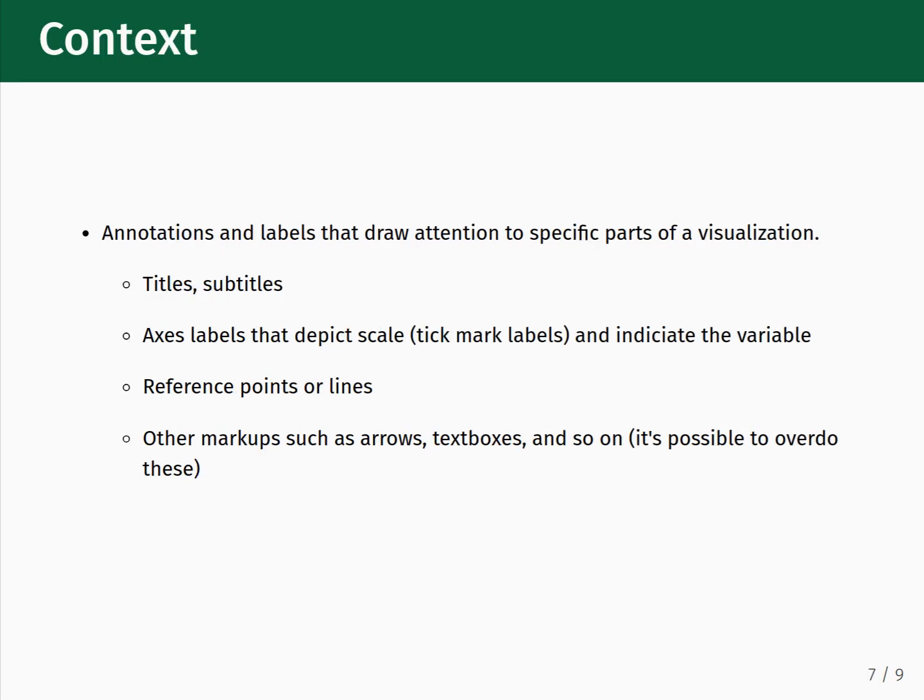The fourth basic element of a data visualization is context. This refers to annotations and labels that draw attention to specific parts of a visualization. Examples include titles and subtitles on a plot, labels along the axes that depict scale and indicate the name of the variable, reference points or lines drawn on the plot, and other markups such as arrows and text boxes. It is possible to overdo the markups, so always try to keep it minimal and focus on the most important things you want to highlight.